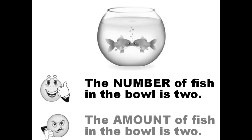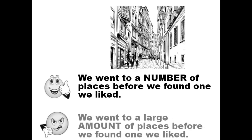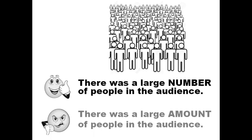Correct: the number of fish in the bowl is two. Incorrect: the amount of fish in the bowl is two. Correct: three is the number of people at the dinner table. Incorrect: three is the amount of people at the dinner table. Correct: we went to a number of places before we found one we liked. Incorrect: we went to a large amount of places before we found one we liked. Correct: there was a large number of people in the audience. Incorrect: there was a large amount of people in the audience.